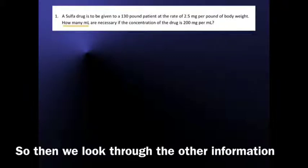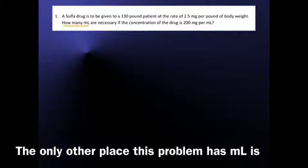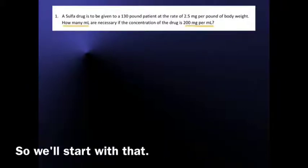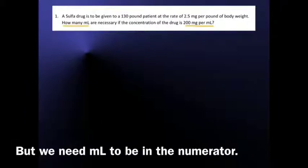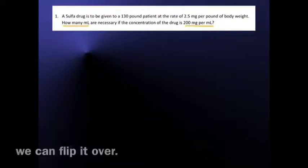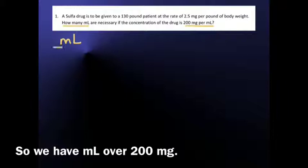So then we look through the other information in the problem for anywhere that has milliliters. The only other place this problem has milliliters is in the concentration, 200 mg per milliliter. So we'll start with that, but we need milliliters to be in the numerator. So instead of writing 200 mg over milliliters, we can flip it over. This is an equivalency, so it's okay to turn this kind of fraction upside down. So we have milliliters over 200 mg.